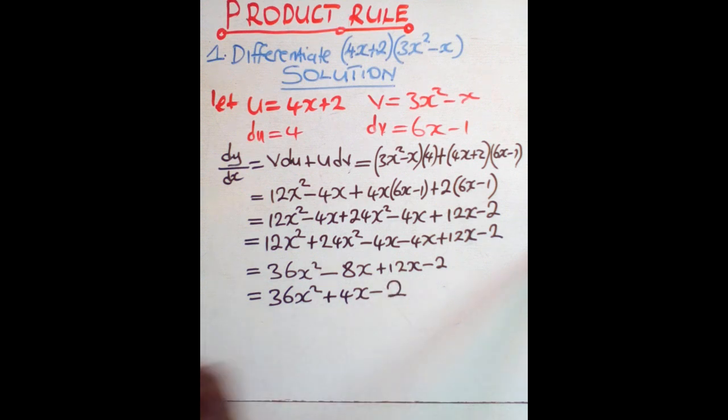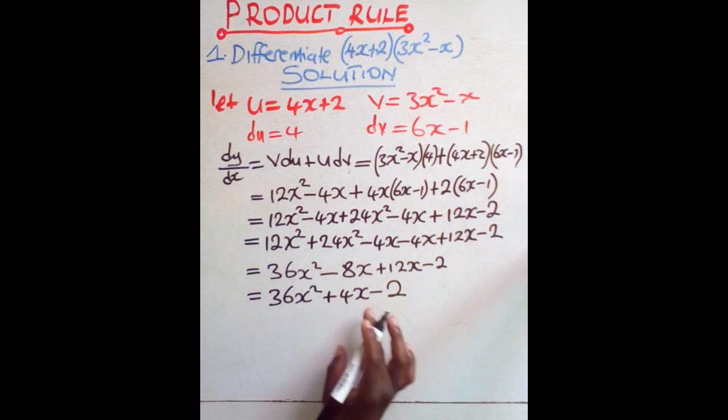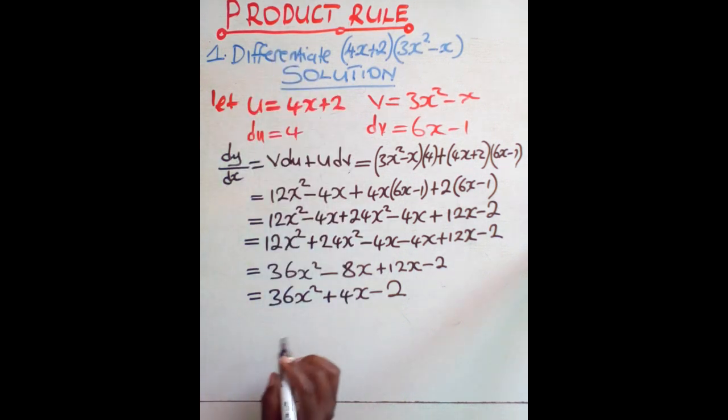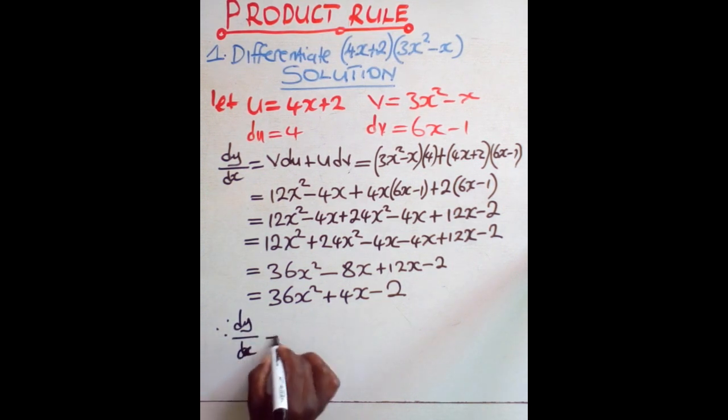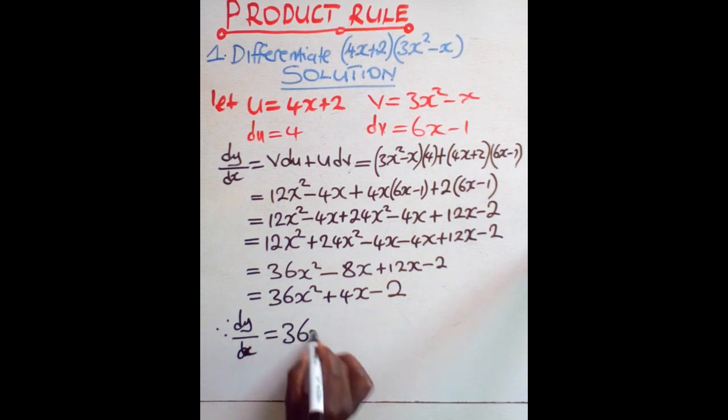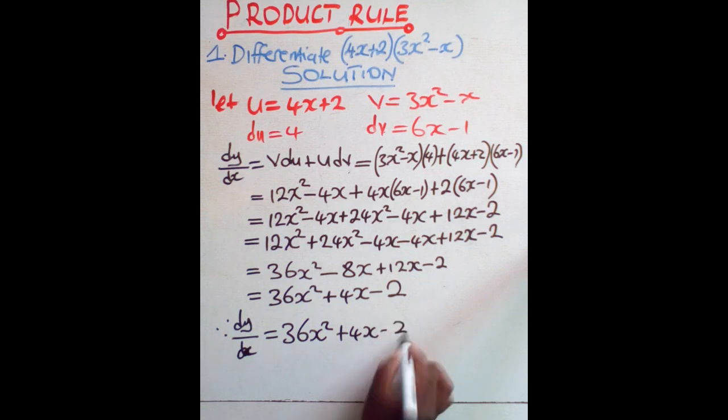What do we do next? This is 36x squared, this is 4x minus 2. The question is to differentiate, to find dy dx. So in short we are saying, therefore, dy over dx is equal to 36x squared plus 4x minus 2.